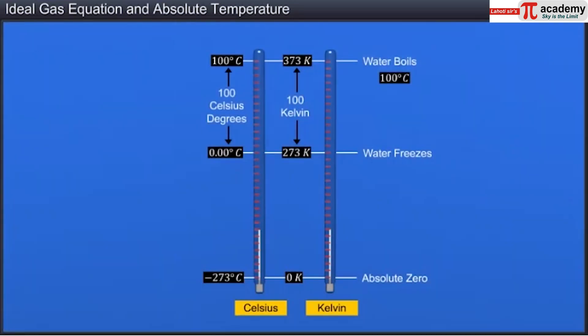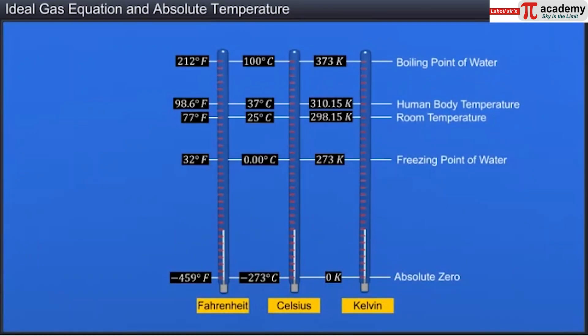The relation between the absolute temperature and Celsius temperature is expressed as T equals to Tc plus 273.15. Here is a comparison between the Kelvin, Celsius and the Fahrenheit temperature scales.